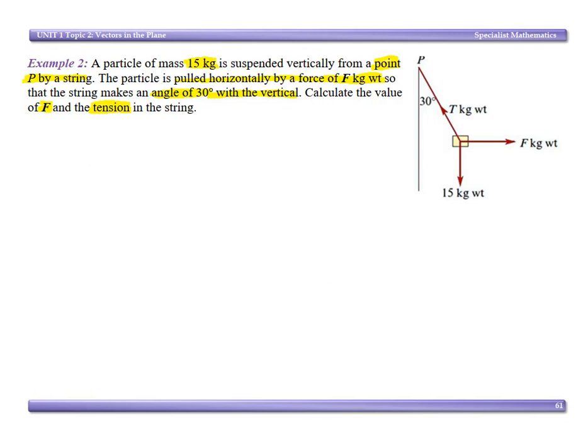I'm going to start with my 15 kilogram weight. Then I'm going to do my force because it comes straight across. And then my tension was at 30 degrees to the vertical. So this is my tension with 30 degrees there.